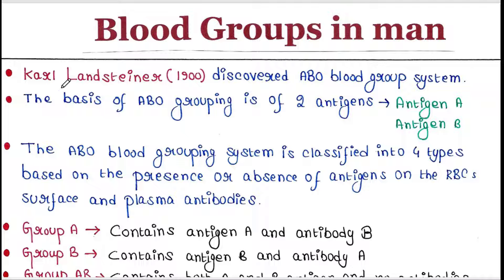Karl Landsteiner discovered the ABO blood group system. The basis of ABO grouping is two antigens: antigen A and antigen B.